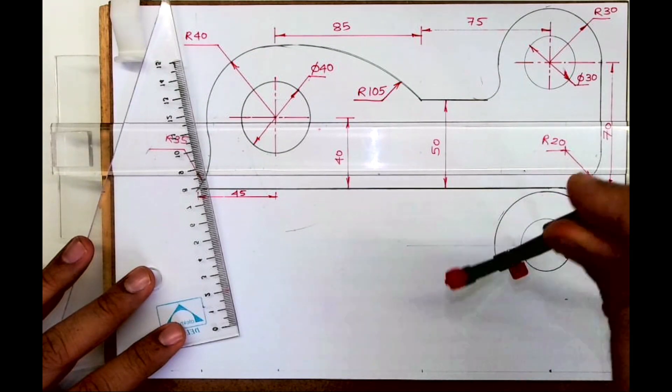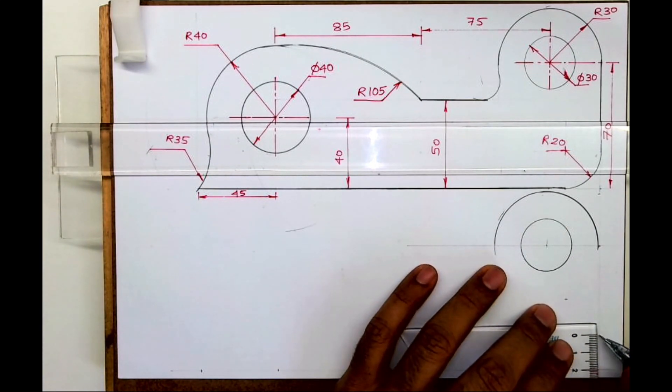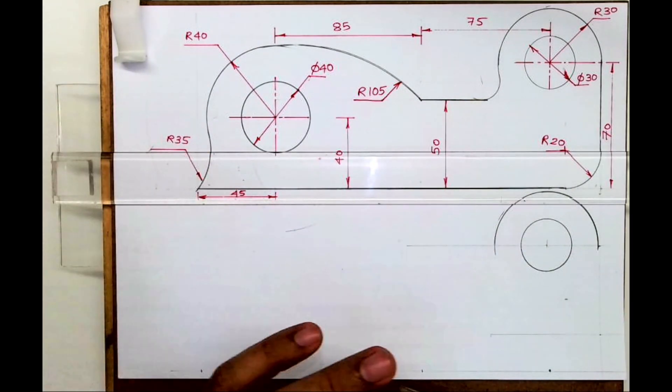From here I will cut radius 30 and from there I'll draw semicircle. After that, inside circle is radius 15 so I can do that also. Then we have to draw radius 20, so take 20 up and 20 horizontal.